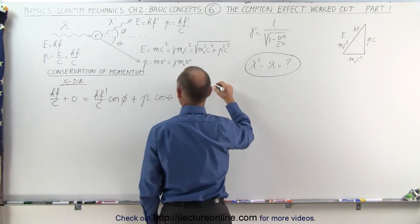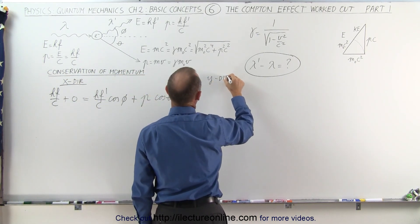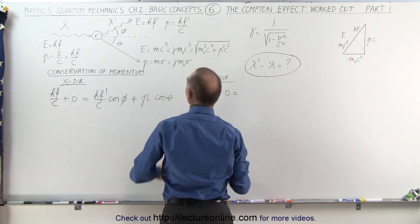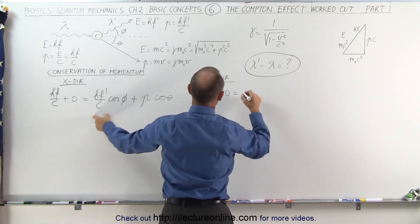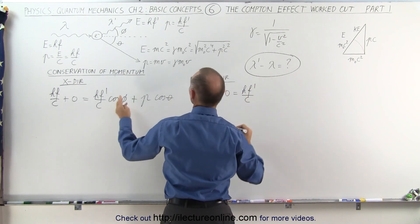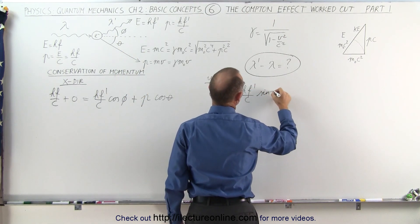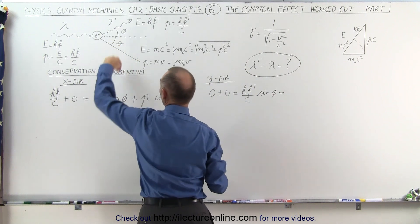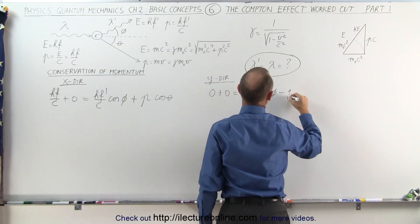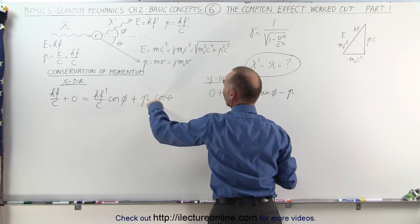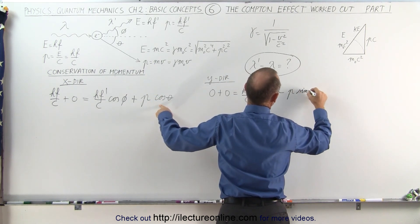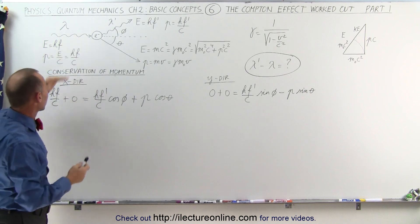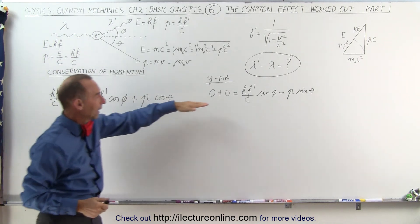In the y-direction, there is no momentum before the collision, so we have zero equals hf prime over c times the sine of phi, minus the momentum of the electron times the sine of theta — because the electron's momentum is in the negative y-direction. Those are the two conservation of momentum equations for the photon-electron collision in the x and y directions.